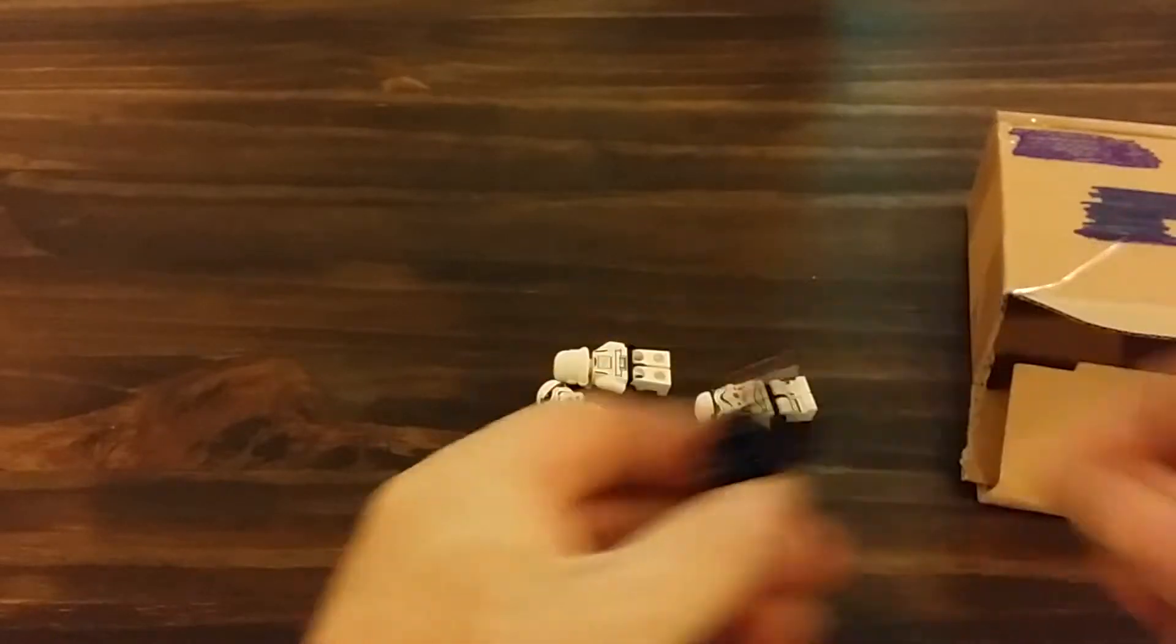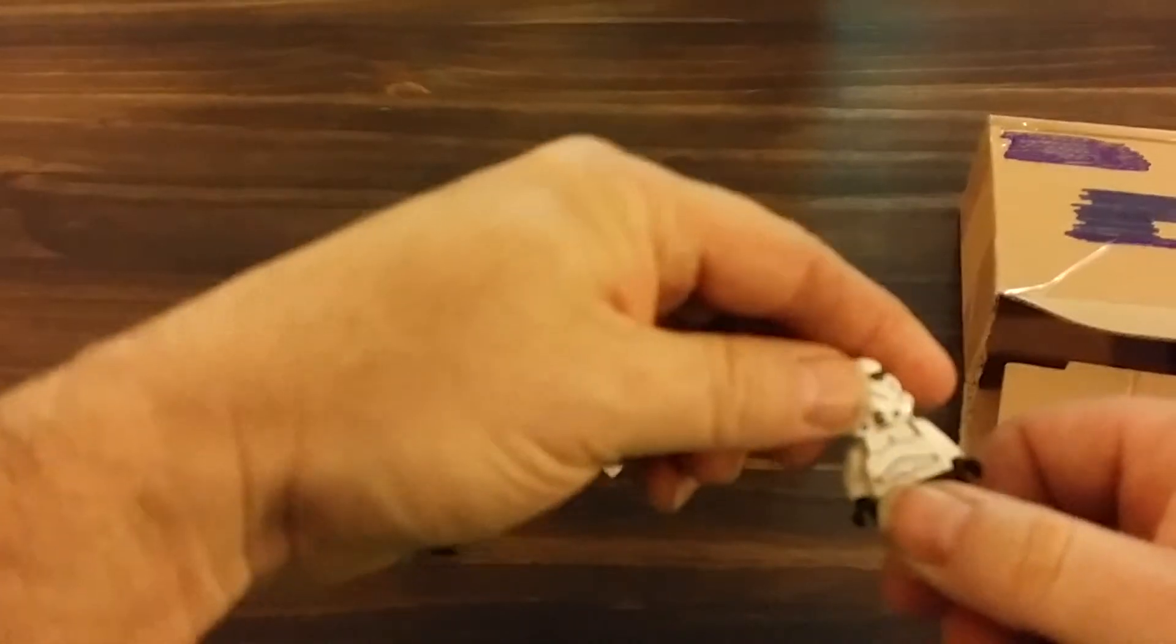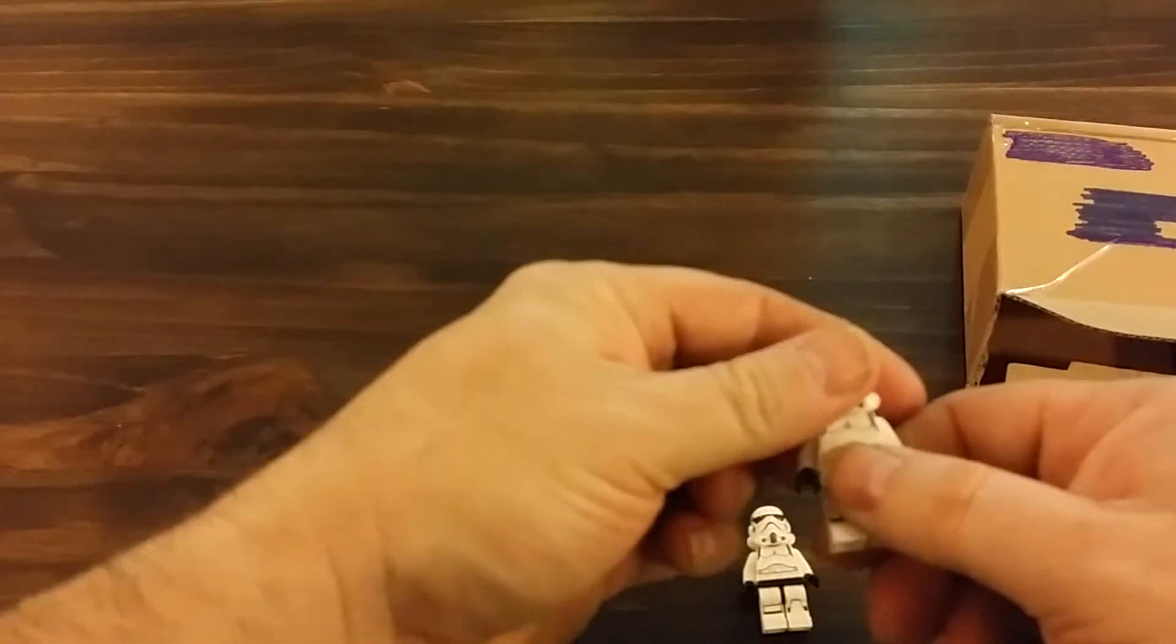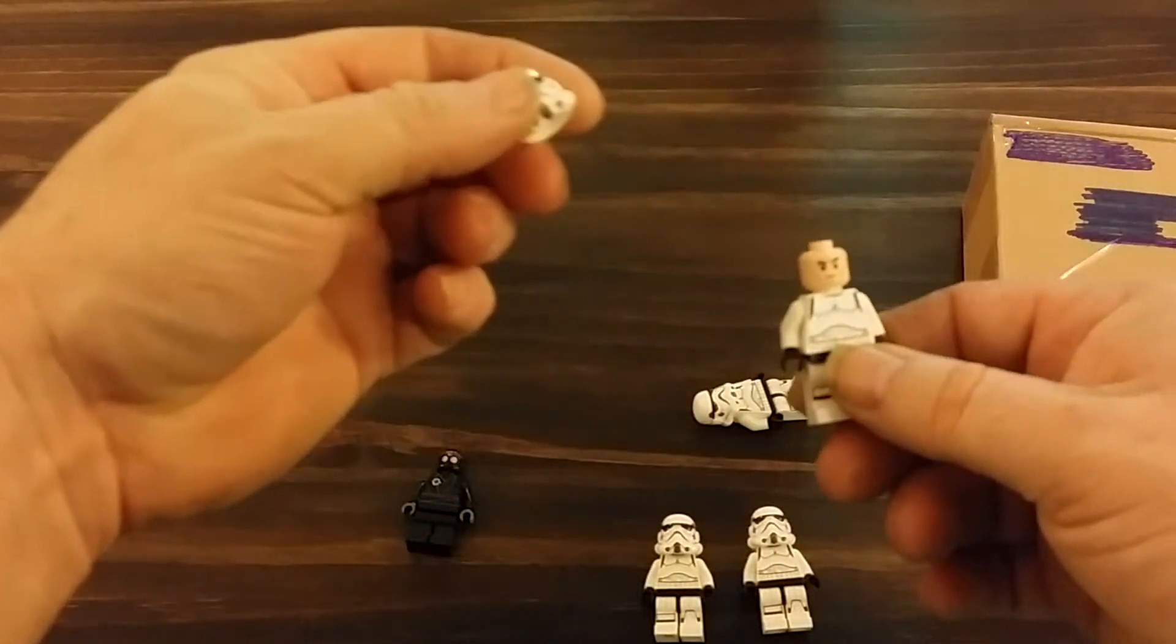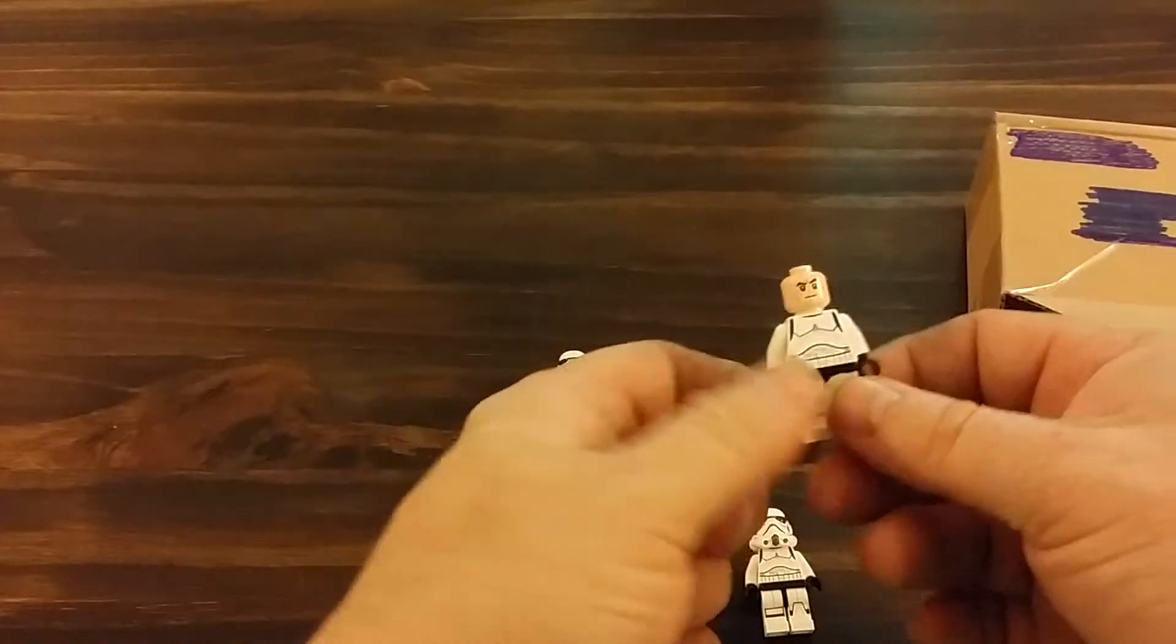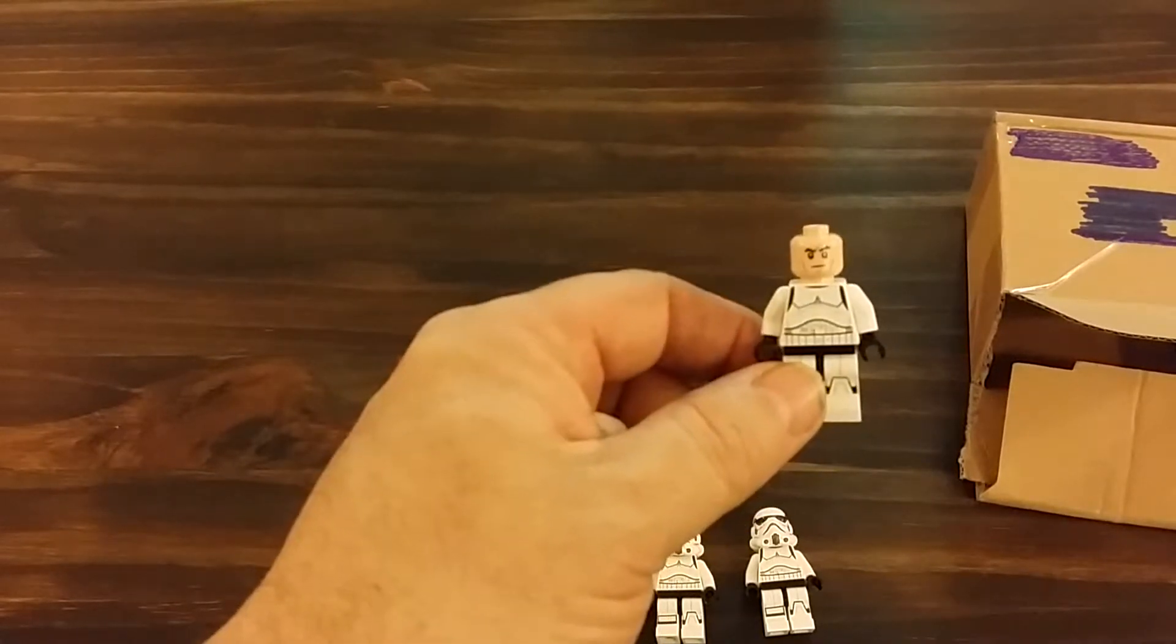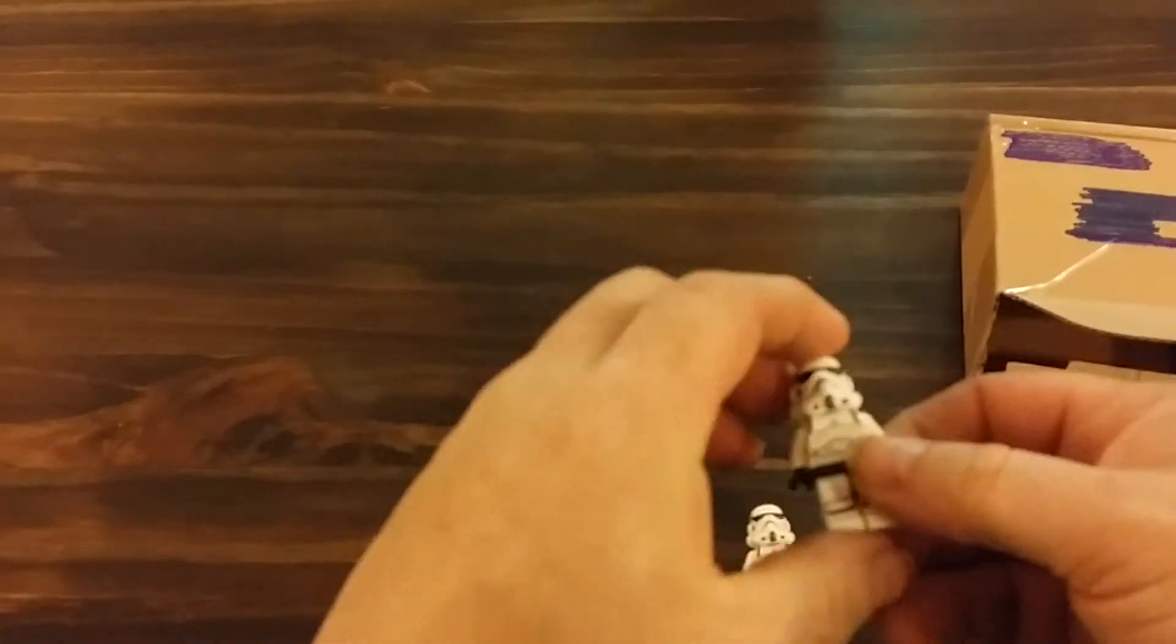These stormtroopers pretty much all the same. This is SW 578 and SW 608 or 607 type figures. This is from the troop transport Imperial transport.